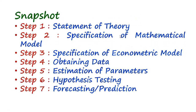Here is a snapshot of how econometrics works. We start with some economic theory — in our example, the law of demand. In step two, we convert the economic theory into a mathematical equation. In step three, we convert the mathematical equation into an econometric equation by introducing the error term. In step four, we obtain data from primary or secondary sources. In step five, we estimate the values of the parameters of the model. In step six, we test whether those values are statistically significant. And finally, in step seven, we forecast or predict the value of the dependent variable.